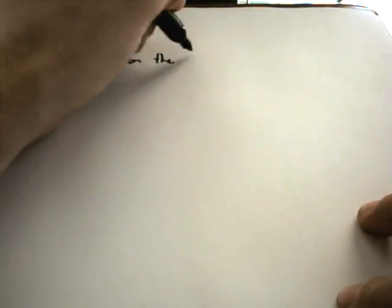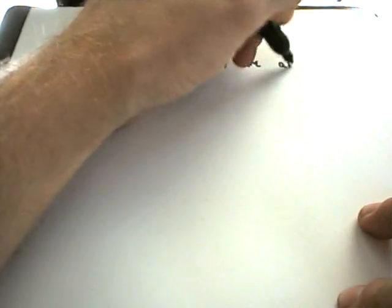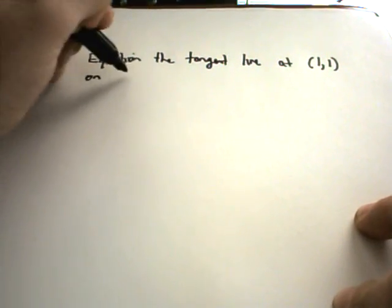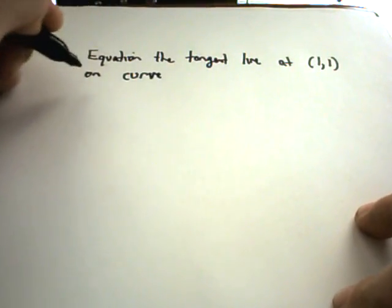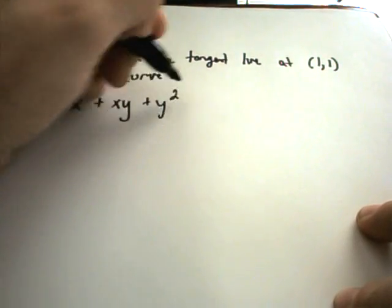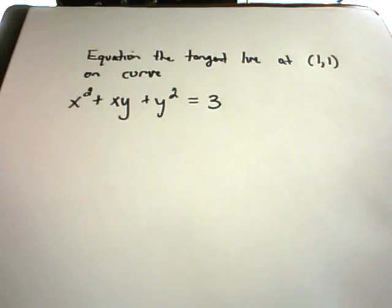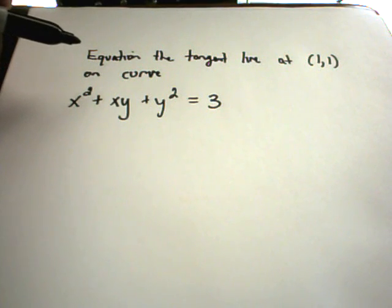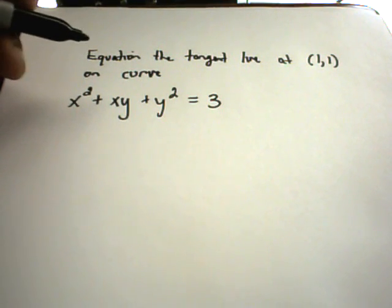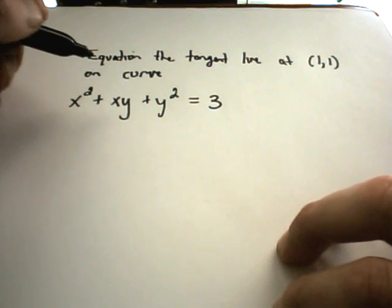So, suppose we have to find the equation of a tangent line at the point (1,1) on the curve x squared plus xy plus y squared equals 3. Okay, so in general, to find equations of tangent lines, you take the derivative and you plug the point into the derivative. And that gives you the slope of the tangent line.